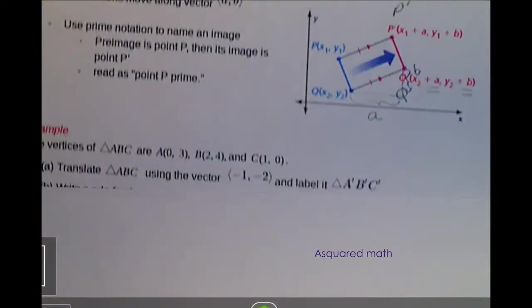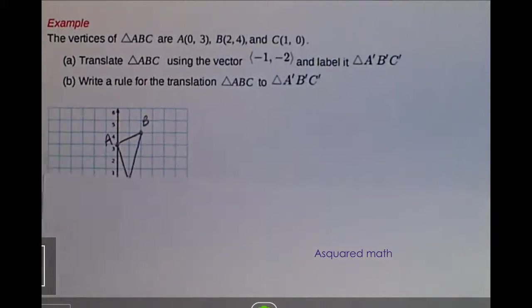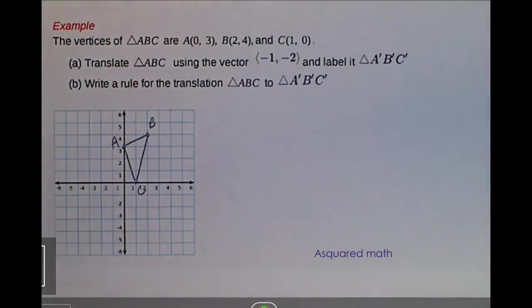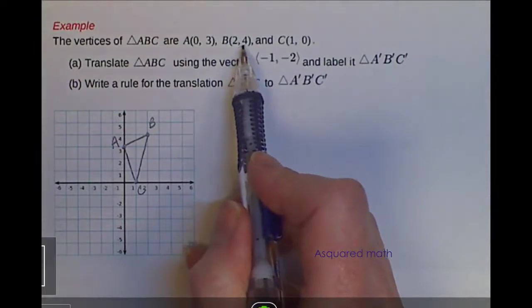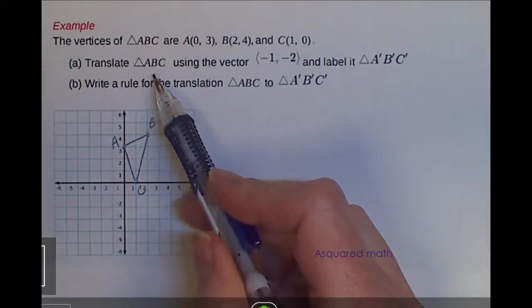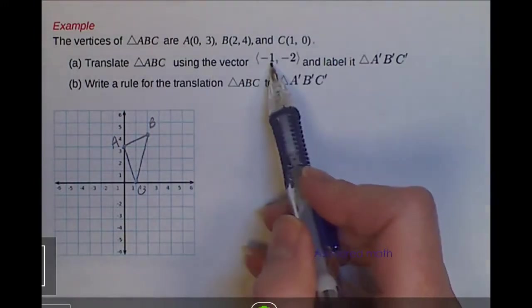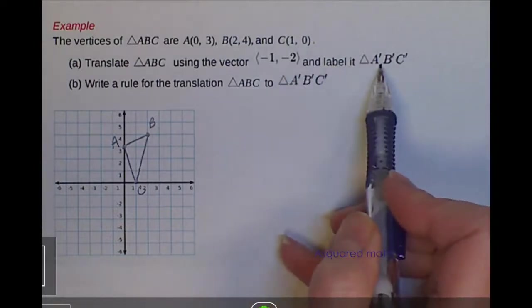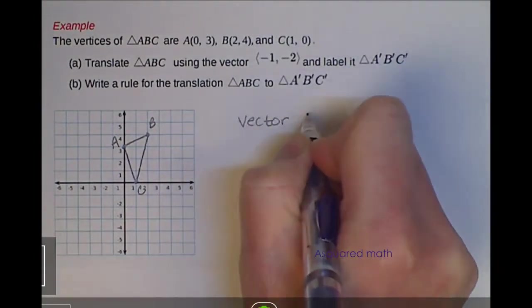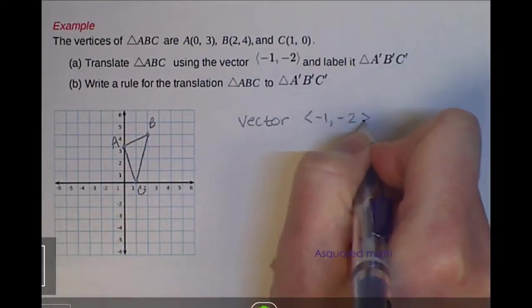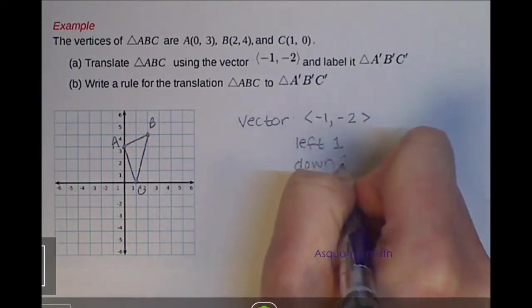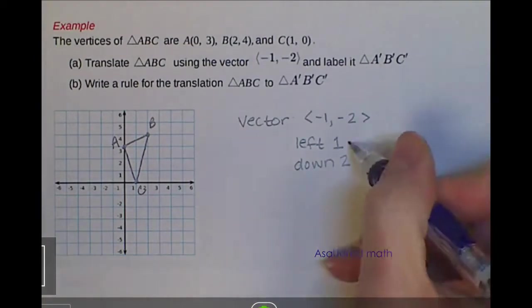Let's end this lesson with doing a couple of examples. So we are given a triangle, triangle ABC. And A is at point (0,3), B is at point (2,4), and C is at (1,0). For part A, we are asked to translate triangle ABC using the vector <-1, -2>, and then label it triangle A'B'C'. So what that means, if we have a vector of <-1, -2>, we are going left 1 and down 2. So every single point that we have is going to go left 1, down 2.